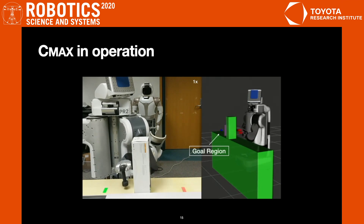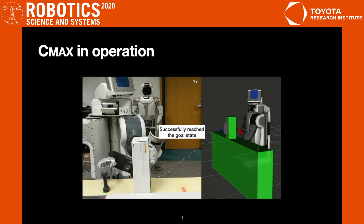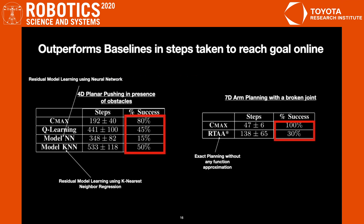We have also compared CMAX to baselines on simulated tasks. On the left, we show how CMAX performs in a simulated 4D planar pushing task where it takes substantially fewer steps compared to a model-free approach and approaches which learn a residual model online using both global and local function approximators. CMAX also obtains a significantly higher success rate compared to these baselines. On the right, we show CMAX performance in a 7D arm planning task where it outperforms a planning baseline that updates the approximate model online with a substantially higher success rate.